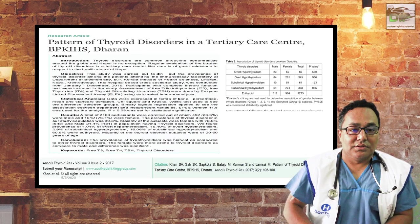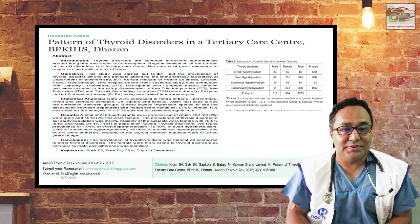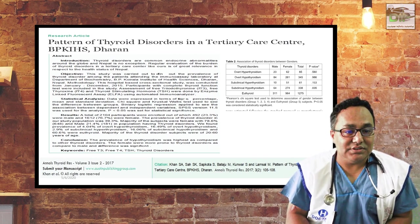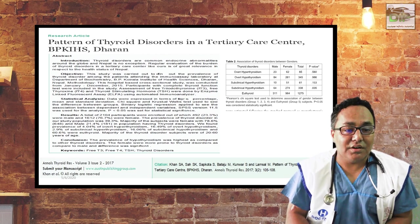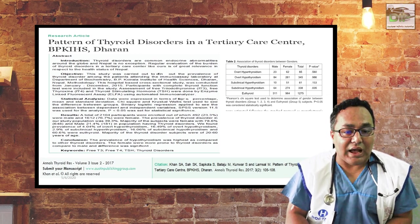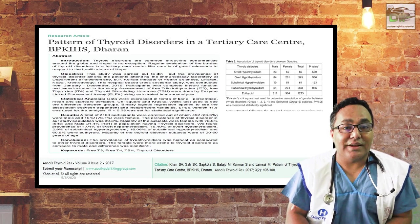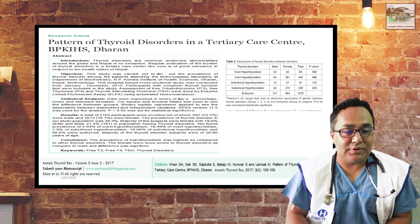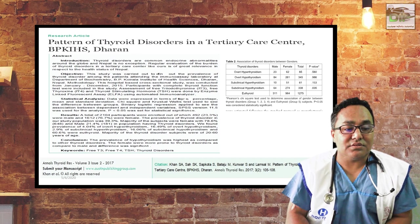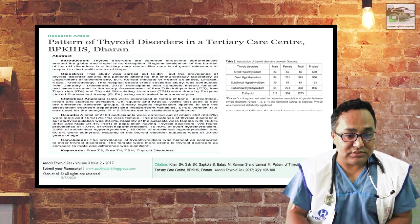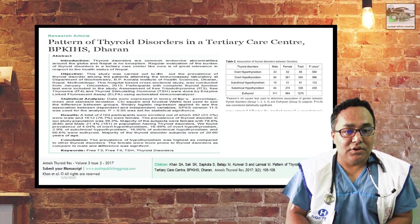If you see the pattern of thyroid disorder in the tertiary care center at our hospital BPKHS, this study was done in 2015. It was a retrospective analysis done in the biochemistry department over one year. Among 2,104 patients, the commonest thyroid disorder was hypothyroidism at 16.49%, followed by 2.9% subclinical hyperthyroidism and 6.06% subclinical hypothyroidism. The prevalence of hypothyroidism was highest, and females were significantly more prone to thyroid disorders than males.